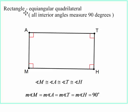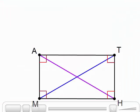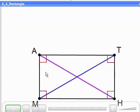So now we're going to go on to a rectangle. Well, that's an equiangular quadrilateral. All of the interior angles are 90 degrees. And its special property is that the diagonals not only bisect each other, but each diagonal is congruent to each other.